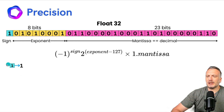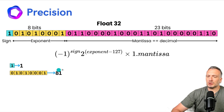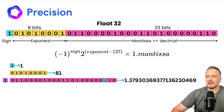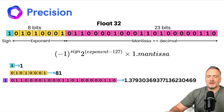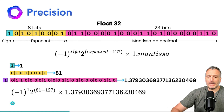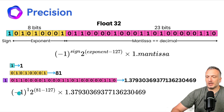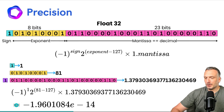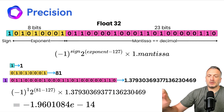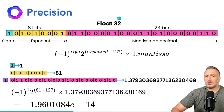Let's look at an example. Here I have the number 1. If I convert the sign bit, it's 1. Converting the exponent bits gives 81. Converting the mantissa bits gives a decimal value, and I append an implicit 1 before the decimal point. Plugging into the formula: sign 1 gives minus 1; exponent 81 minus 127, taken to the power of 2; multiplied by the mantissa value. The final number is minus 1.9 times 10 to the minus 14. This is how you convert an array of 0s and 1s into a floating point number using the Float32 data type.